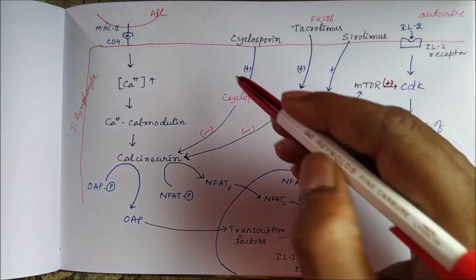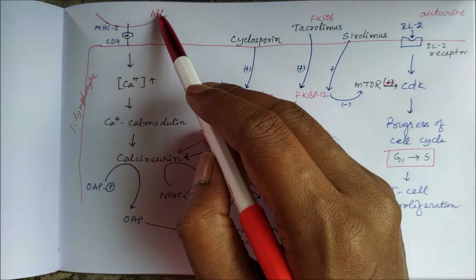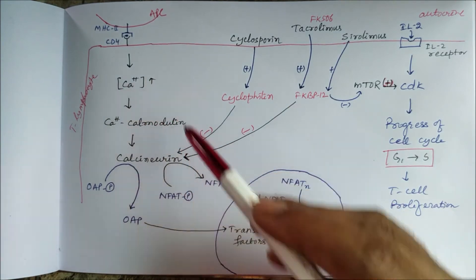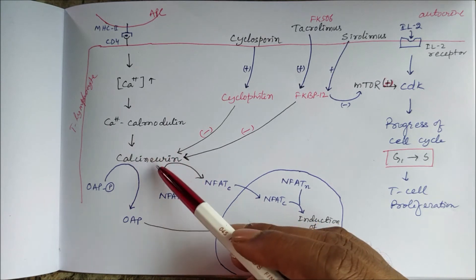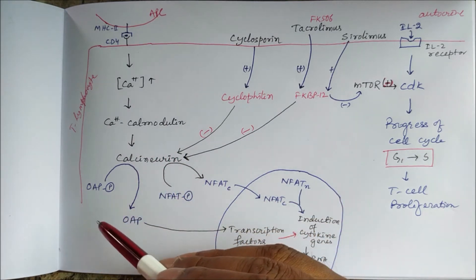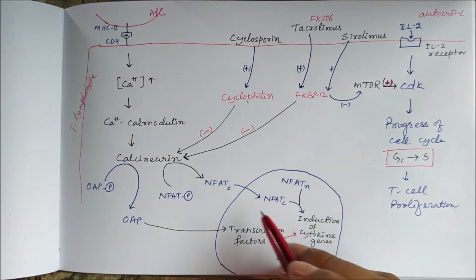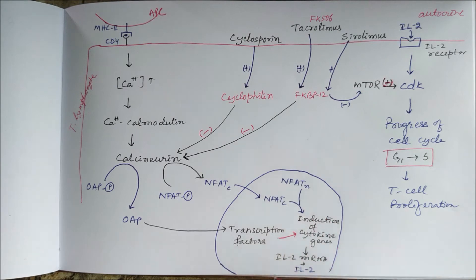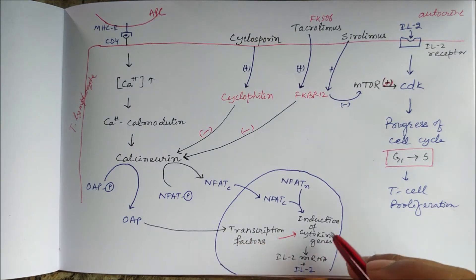When there is interaction between MHC class II on the antigen-presenting cell and CD4 of T lymphocytes, intracellular calcium increases. This calcium binds to calmodulin, and the calcium-calmodulin complex activates calcineurin. Calcineurin then activates the nuclear factor of activated T cells (NFAT). The cytosolic component and the nuclear component of NFAT together induce cytokine genes by producing transcription factors.